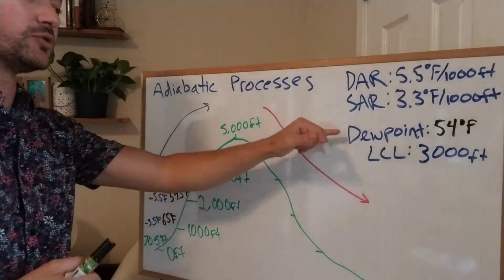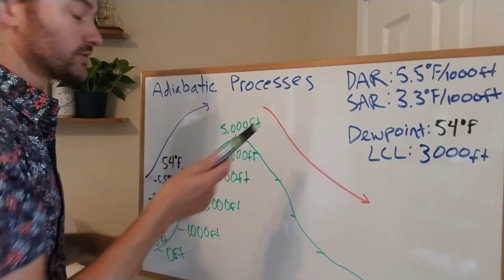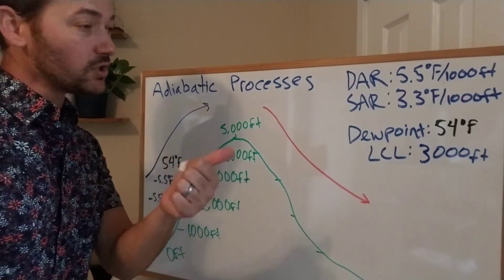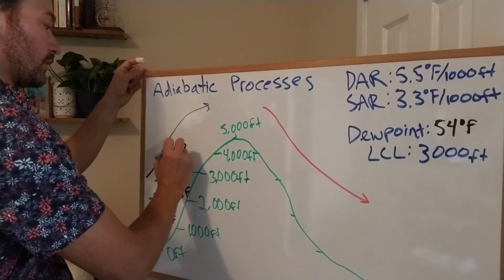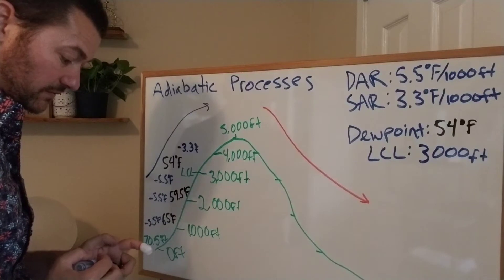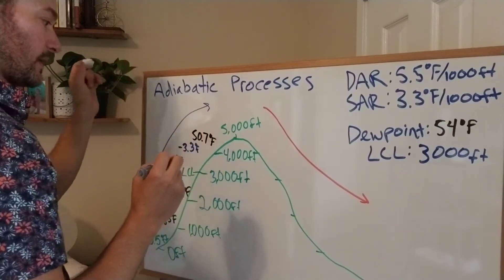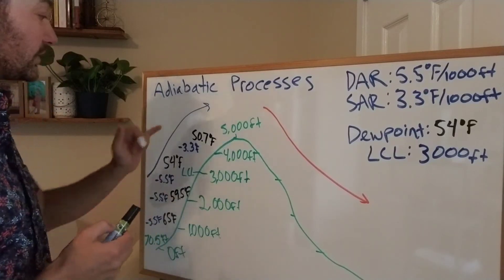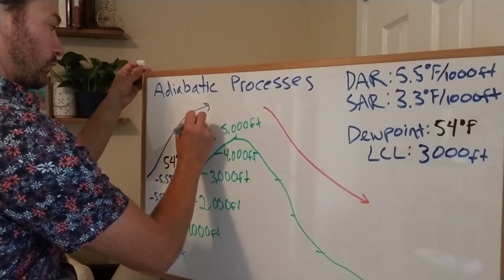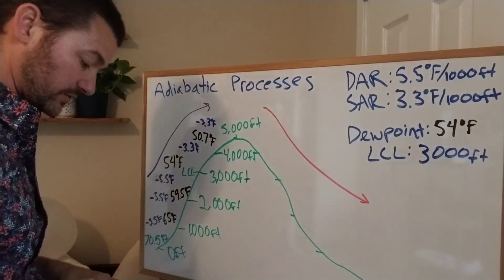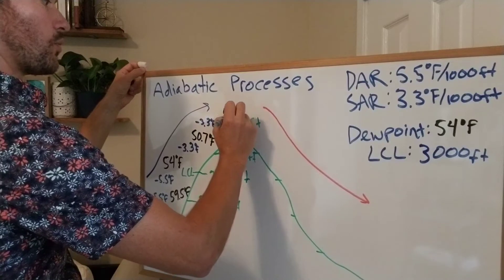Now that we're at the LCL and dew point, the air is saturated — we're in a cloud. We switch to the saturated adiabatic rate, which is 3.3 degrees Fahrenheit per thousand feet. Still ascending but now saturated, we subtract 3.3 from 54, giving us 50.7 degrees Fahrenheit at 4,000 feet. Subtracting another 3.3, the temperature at the top of the mountain at 5,000 foot elevation is 47.4 degrees Fahrenheit.